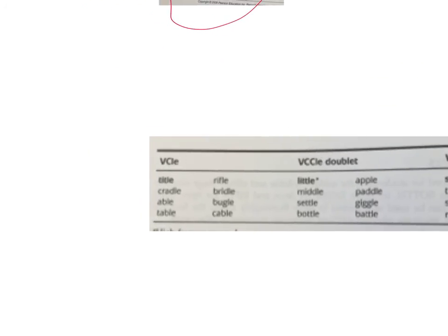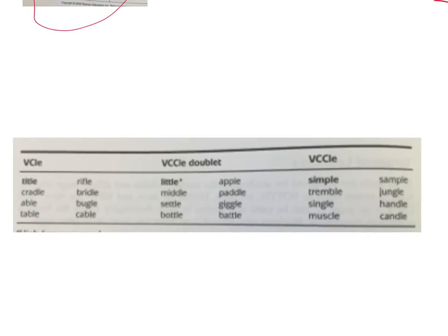So here, down here, you have your final list. It's a little blurry, but you can see your V-C-L-E words here. Title, cradle, able, table, rifle, bridle, bugle, and cable. All of them have your long vowel sounds.